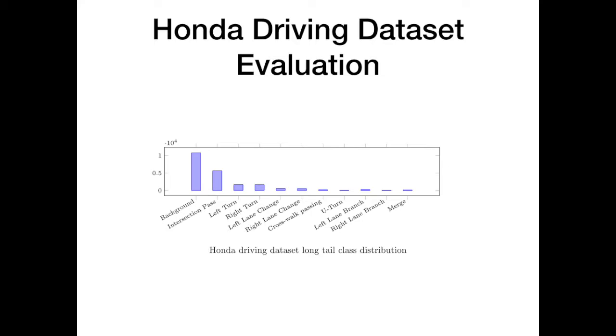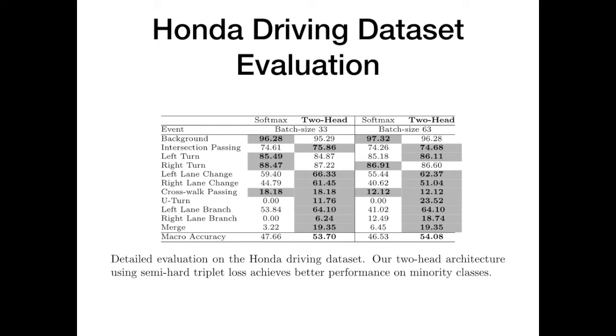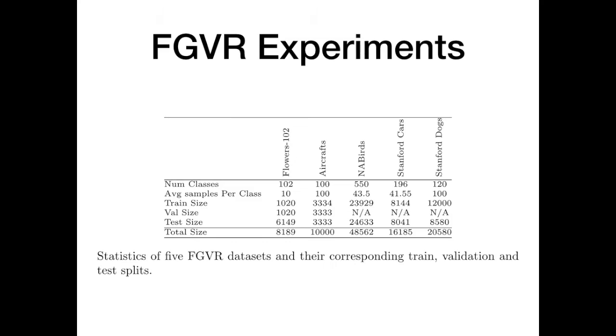We evaluate the two-head architecture and triplet loss regularizer on Honda Research Institute driving dataset using action recognition tasks. The Honda driving dataset is a video dataset for driver behavior understanding and causal reasoning. It is highly imbalanced, thus, it is challenging to set a fixed number of class representatives. Our proposal boosts classification performance, especially on minority classes. The embedding regularizer limits the softmax overfitting capability on minority classes.